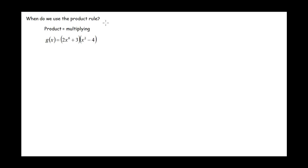So when do we use the product rule? The key word here is the name product, and that word product is just another way of saying multiplying. So, for example, if our g of x is this quantity in parentheses — 2x to the 6 plus 3 — times x squared minus 4, then this is a function that we could use the product rule on.